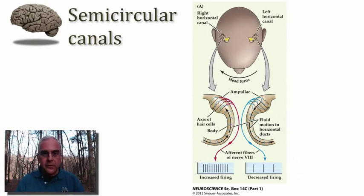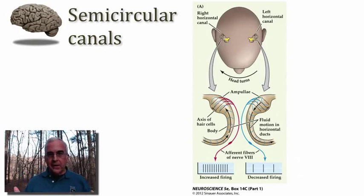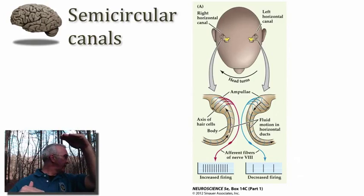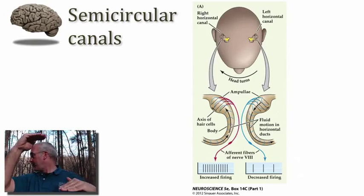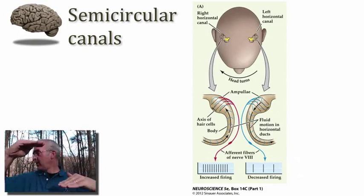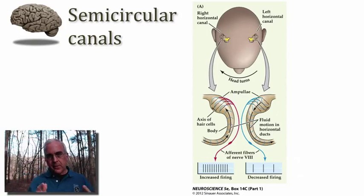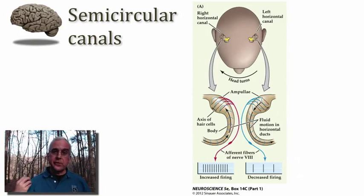What's important for understanding central processing is that the brainstem compares activity coming from both vestibular nerves. A leftward head turn elevates activity in the left vestibular system and decreases activity in the right, while a rightward turn produces the opposite. The brainstem is essentially comparing the afferent activity arriving from the two eighth cranial nerves.